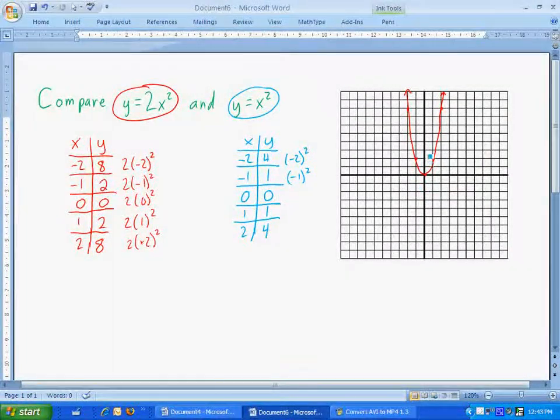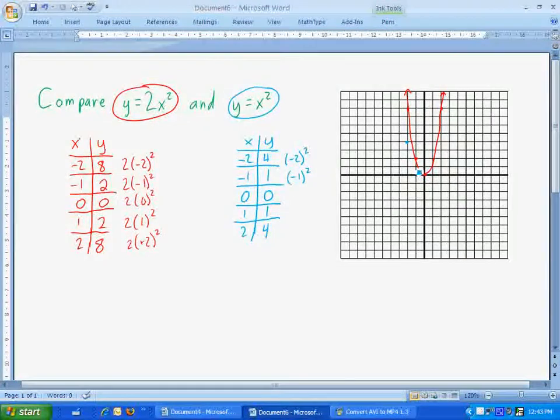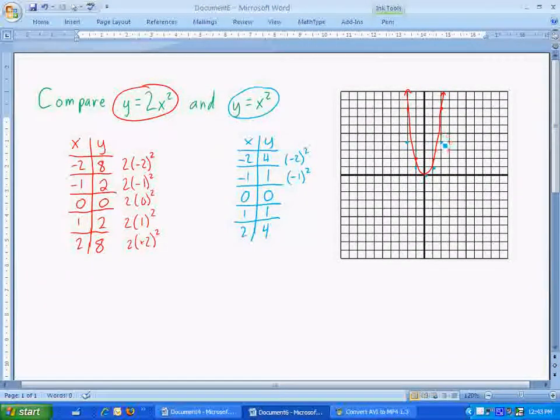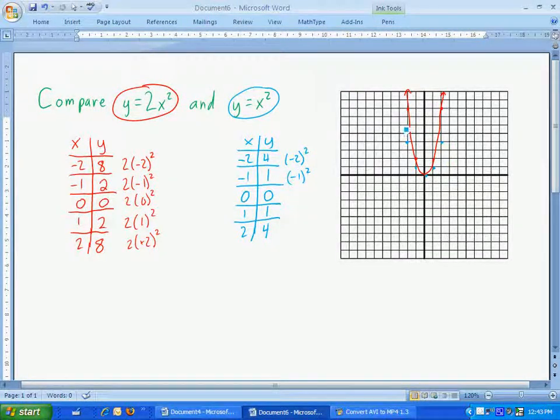So I'll go ahead and put this one down now. At negative 2, y is 4. At negative 1, y was 1. 0, 1. And when x was 2, y was 4. And so hopefully you'll see that I've got a slightly different graph this time. Just like this.